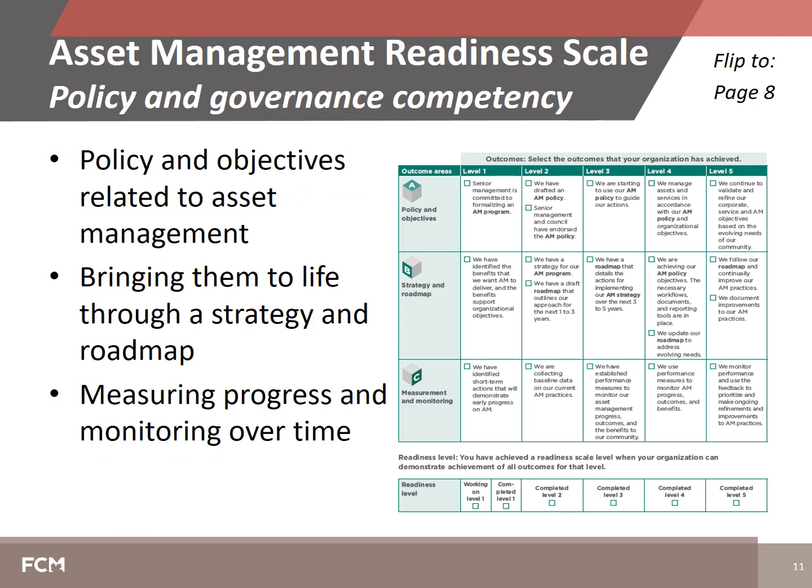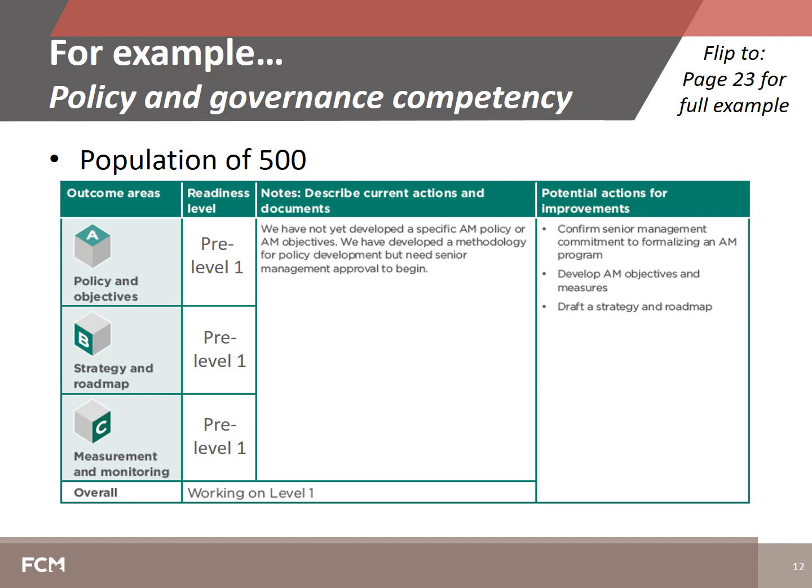By developing the policy and governance competency, your organization is putting in place policies and objectives related to asset management, bringing those policies to life through a strategy and roadmap, and then measuring progress and monitoring implementation over time. This competency assesses your organization's commitment to embedding asset management into your decision-making processes and merging it with your long-term objectives and strategy. For example, a community with a population of 500 at the beginning of their journey might not yet have developed a specific asset management policy, but may have developed a methodology for doing so and be awaiting senior management approval — placing them at the working-on level 1 readiness level.